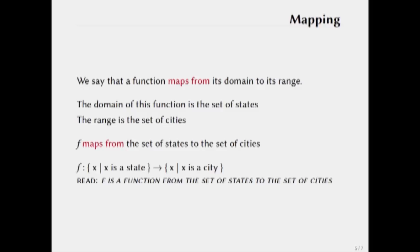So we say that a function maps from its domain to its range. The domain is the set of states in this case, the range is the set of cities. And we can define functions in that way. We'll say f as in f for function, the typical variable for function. f maps from the set of states to the set of cities. And we can write that in a notation like this where f is a function that maps from the set of states to the set of cities. So this colon would tell us maps from, and then the arrow is read as to.